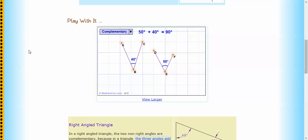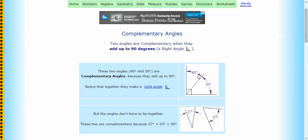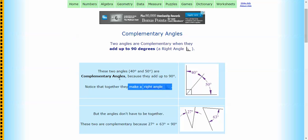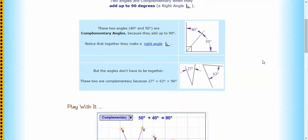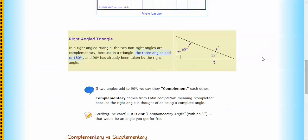Now these angles might be next to each other. They might be wedged into a right angle like we have in this example, and they might not. They might be completely separate. They don't have to be together, but sometimes they will be.